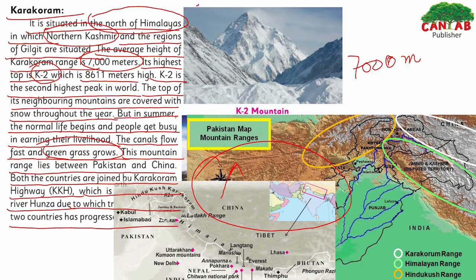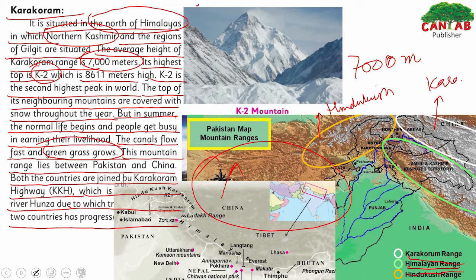Looking at the image: the Karakoram ranges are shown with a white line, the Himalaya ranges in green, and the Hindu Kush ranges in orange. So the white line is the Karakoram ranges, the green is the Himalayas, and the orange is the Hindu Kush. This shows the position of these three mountain ranges in Pakistan — all on the north side.